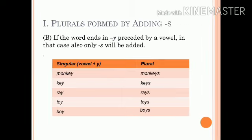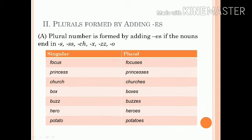Similarly, if the word ends in Y preceded by a vowel, in that case also S will be added. For example: monkeys, keys, rays, toys, boys, etc.